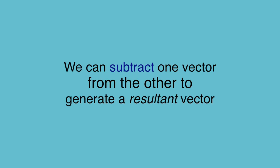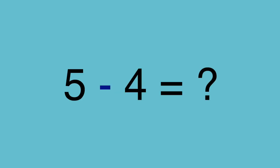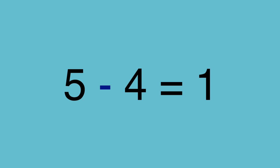Subtracting vectors still creates a third vector, known as the resultant vector. To explain how it's done, we first need to review the subtraction of ordinary numbers. What do you get when you take 4 away from 5? You get 1. How about when you add negative 4 to 5, like this? You get the same answer.